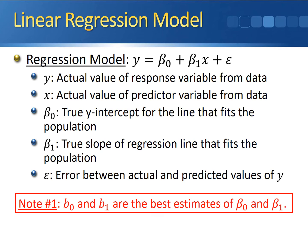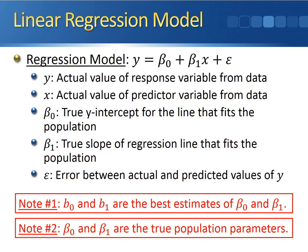Now, keep in mind that b0 and b1 are the best estimates of beta0 and beta1, and beta0 and beta1 are the true population parameters. Since beta0 and beta1 are parameters, we never substitute in numbers for beta0 and beta1 in a regression model.